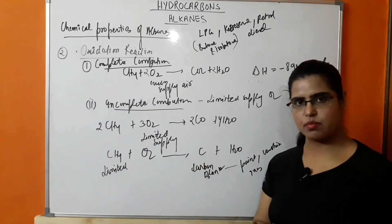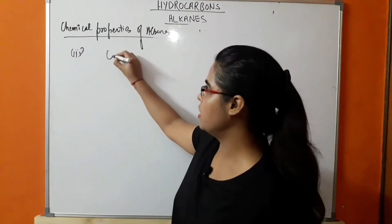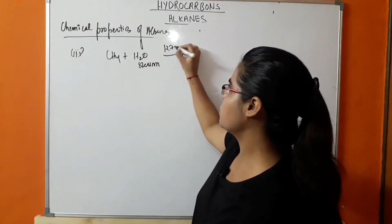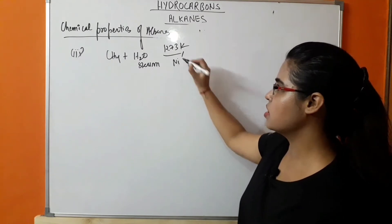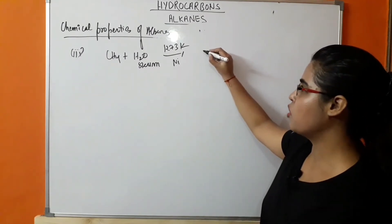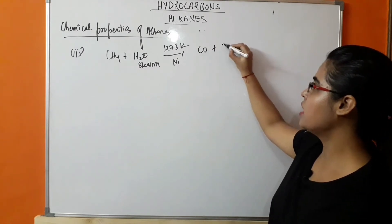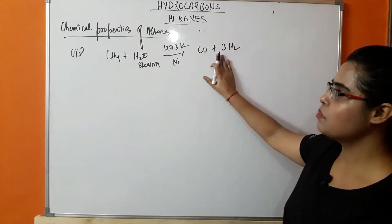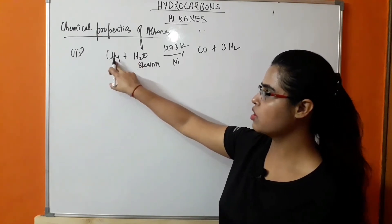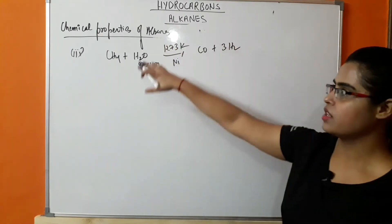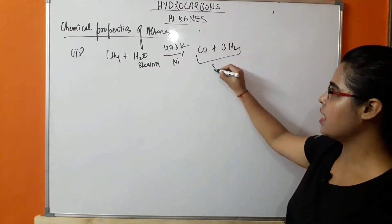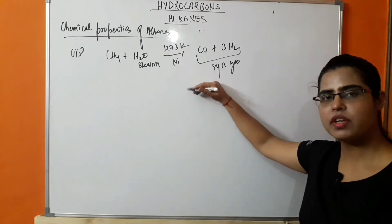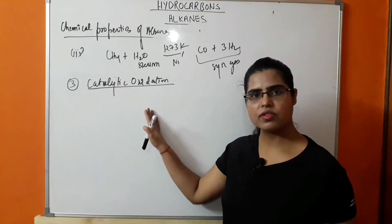The third example of incomplete combustion is when CH4 reacts with steam at a temperature of 1273 K with nickel as catalyst. In this case, carbon monoxide and hydrogen are formed: CH4 + H2O → CO + 3H2. The reaction is balanced because the number of hydrogens on both sides are equal. This product is known as syngas or synthesis gas.